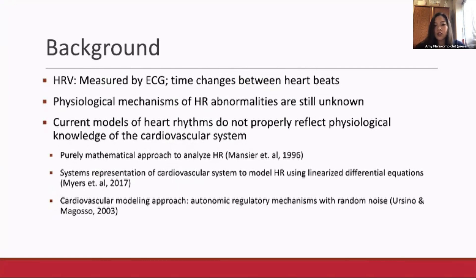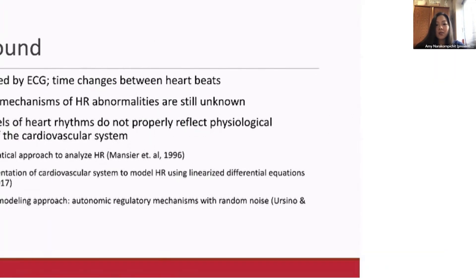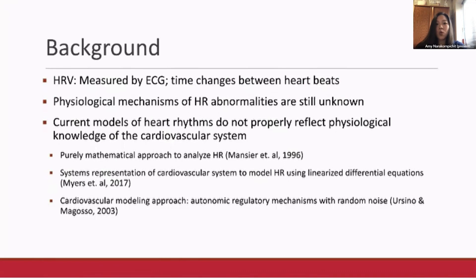Another cardiovascular modeling approach by Ursino and Megosi models physiological function and includes autonomic regulatory mechanisms. However, they do not provide the physiological source causing the change in heart rhythms within their system. Instead, they implement a random noise generator to generate the variability, and this limits the model since it does not physiologically explain why the heart rate variability emerges.